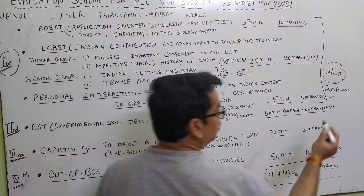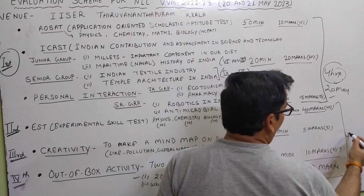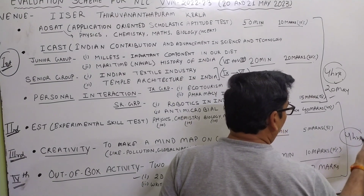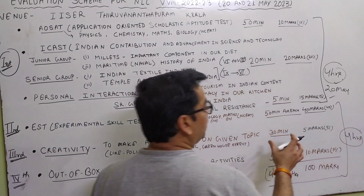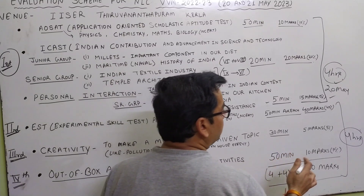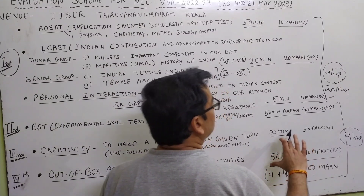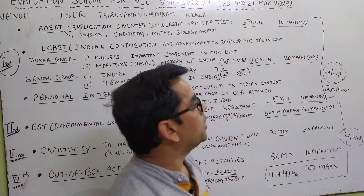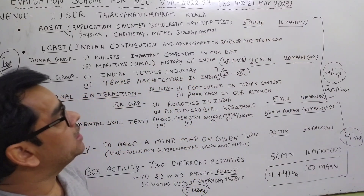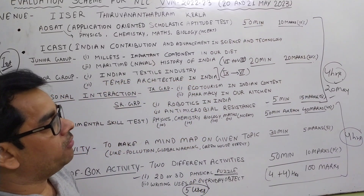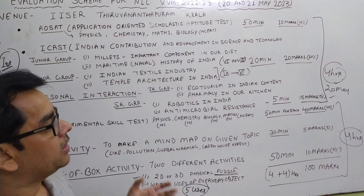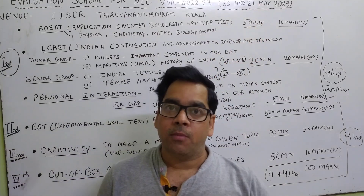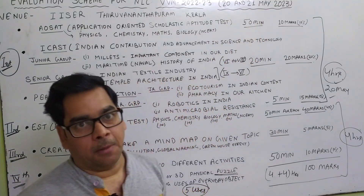This part also comprises four hours and takes place on 21 May. The national level camp spans two days. The result is declared on 21 May by 6 PM.